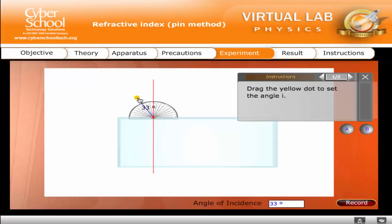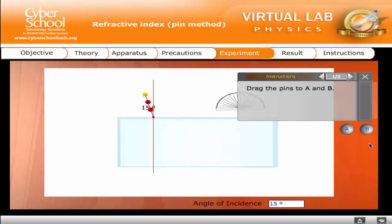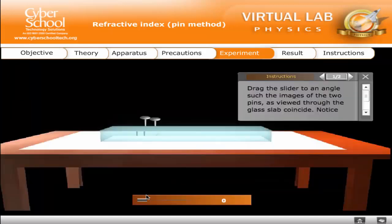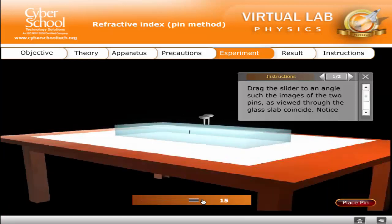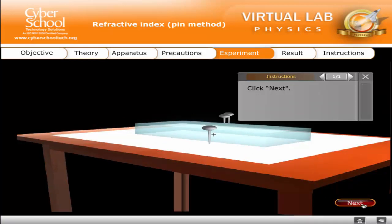Drag the yellow dot to set the angle I. Drag the pins to A and B. Drag the slider to an angle such that the images of the two pins as viewed through the glass slab coincide. Notice that this angle is the same as the angle of incidence I. Click Next.